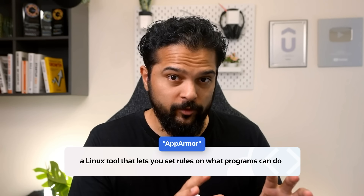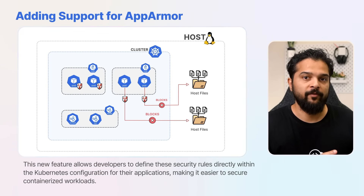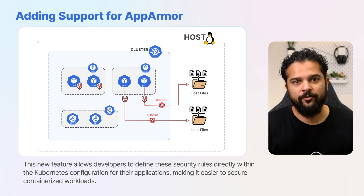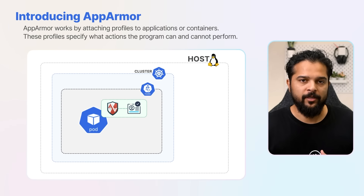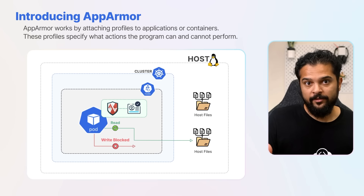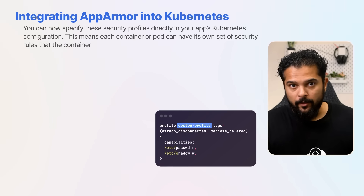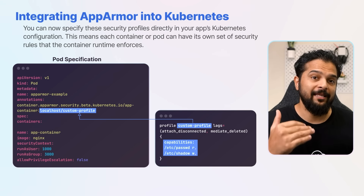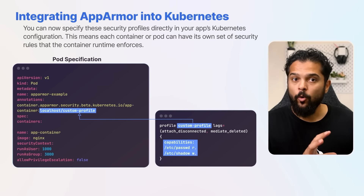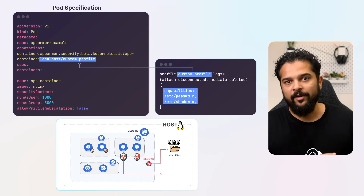Kubernetes 1.31 addresses these issues by adding support for AppArmor, a Linux tool that lets you set rules on what programs can do. Think of AppArmor as a security guard for your applications — it ensures that applications only do what they're supposed to do. This new feature allows developers to define security rules directly within the Kubernetes configuration. AppArmor works by attaching profiles to applications or containers, specifying what actions the program can and cannot perform. For instance, you can create a profile that allows an application to read certain files but not write to them, preventing unauthorized actions. If an application tries to perform an action outside its allowed profile, AppArmor blocks it, preventing potential security breaches.